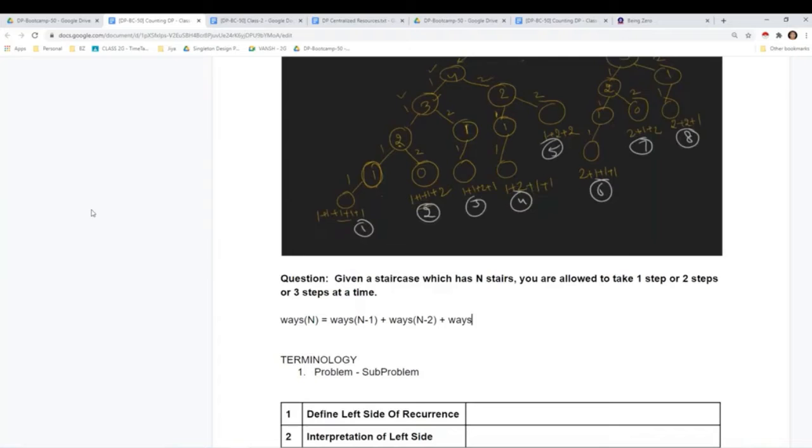For n equals one, there's only one way, we'll take just one step. For n equals two, we'll take two steps, like one-one and just two. For n equals three... So you're saying ways of n is starting with one, right? First you start with one step, then all the ways which start with two steps.